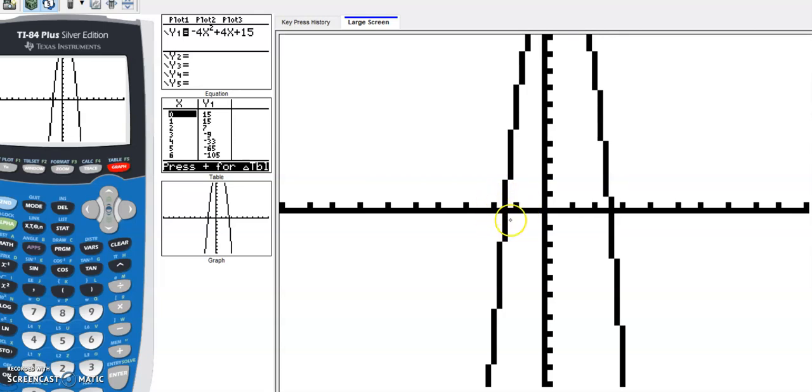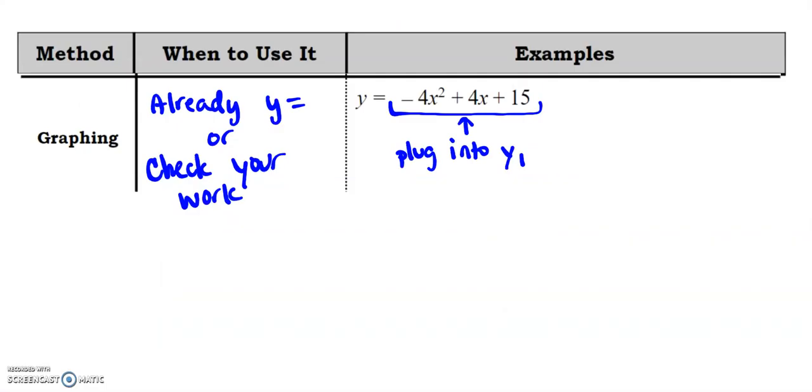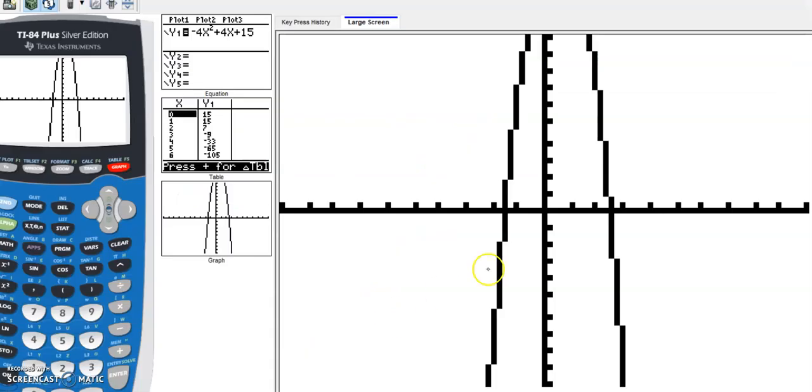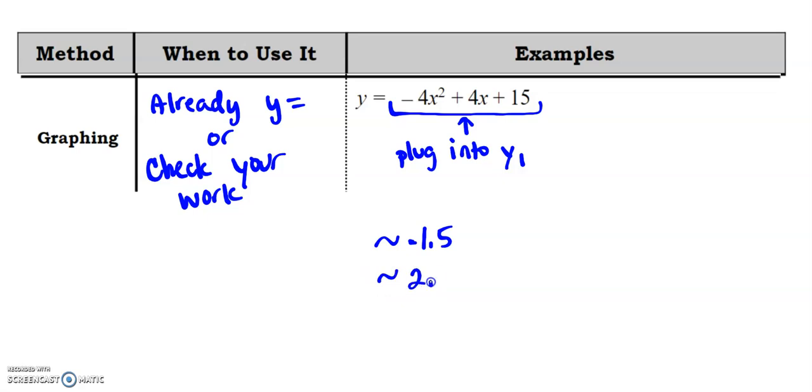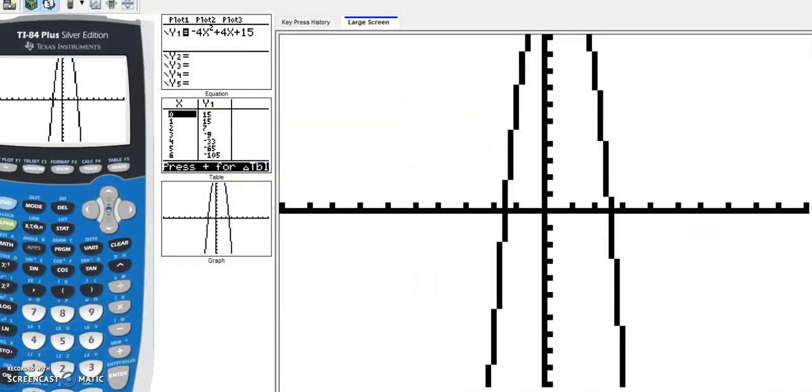So if you look, if you can follow my cursor, it looks like I probably have an x intercept between negative one and negative two. So possibly at negative, so maybe at negative 1.5. I'm putting a little approximate symbol. And then maybe at one, two, at two, maybe at two and a half. So maybe approximately at 2.5. Now, here's how you can check to make sure that you're right. If you hit second, calculate, and then you go to zero, because that's what we're looking for. We're looking for a zero.